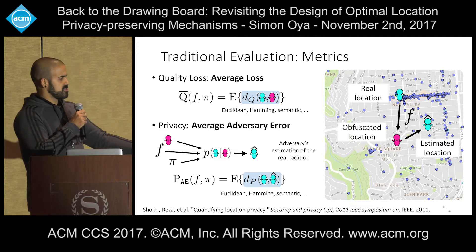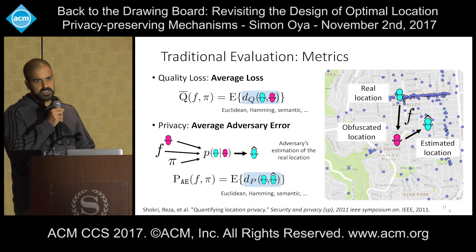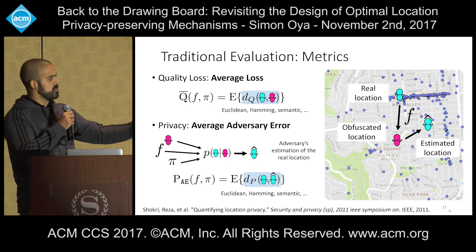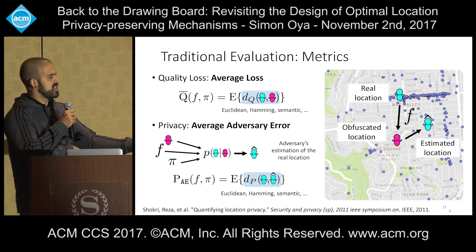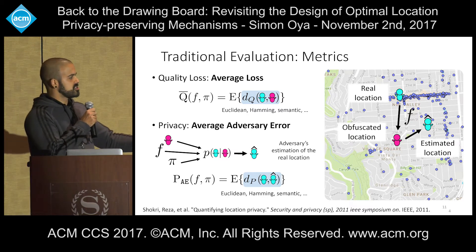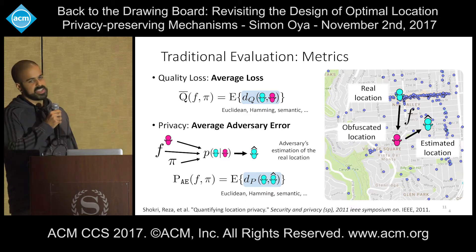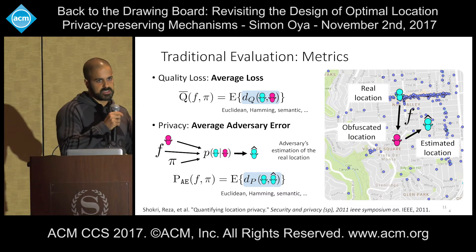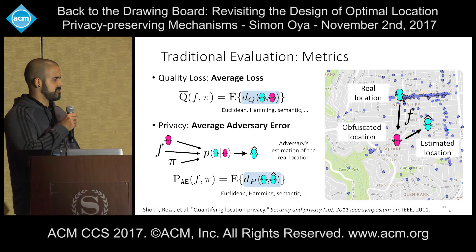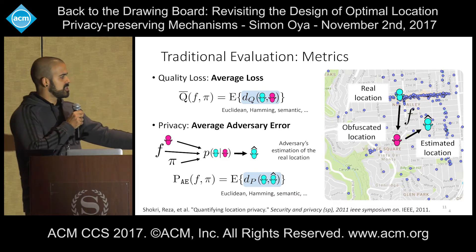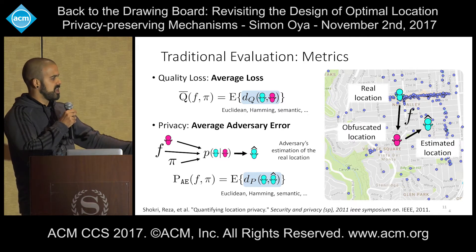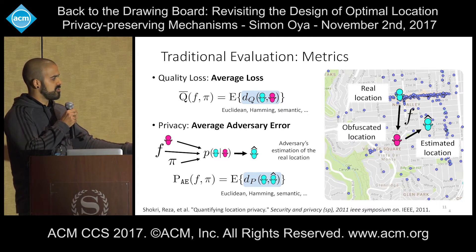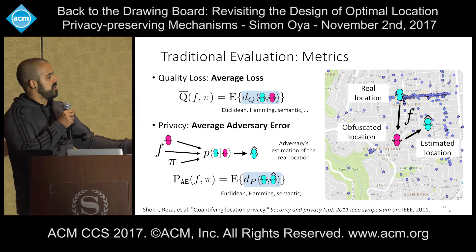The privacy metric typically used, proposed in the seminal work on quantifying location privacy, is the average adversary error. The adversary knows the obfuscated location, the mechanism, and the prior, so she can build a posterior on possible input locations and estimate the real location. We define the average adversary error as the expected distance between the real location and the estimated location. The smaller this distance, the closer the adversary's estimate is to the real location, and therefore the less privacy the user has. We show an example comparing privacy using a semantic metric and quality loss using Euclidean distance — with a better utility performance trade-off for reporting locations further away providing more privacy.